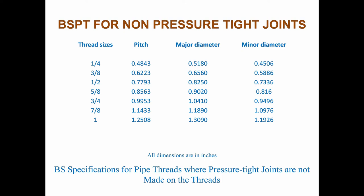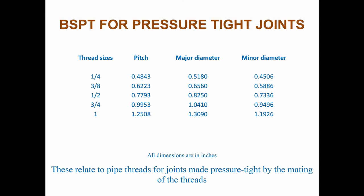For BSPT pressure tight joints, these joining threads relate to pipe threads for joints made pressure tight by the mating of the threads. They include taper external threads for assembly with either taper or parallel internal threads. Parallel external pipe threads are not suitable as joining threads.